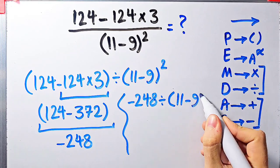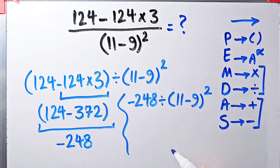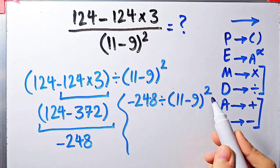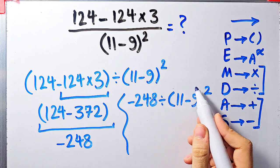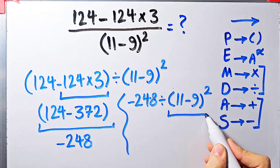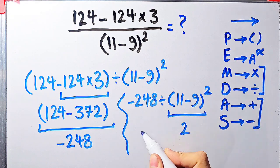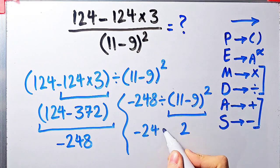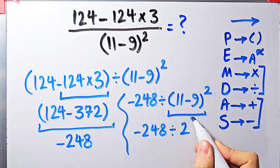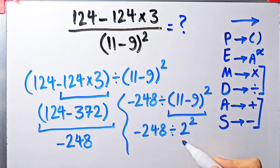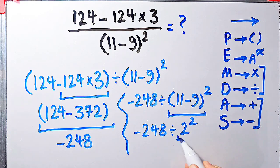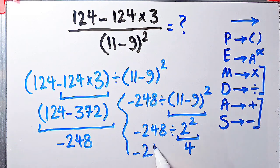Now we have division, parentheses, exponent, and subtraction. Again, we simplify the parentheses first: 11 minus 9 equals 2. Now we have negative 248 divided by 2 to the power of 2. We have division and exponent — first we simplify the exponent: 2 to the power of 2 equals 4.